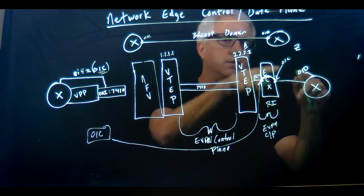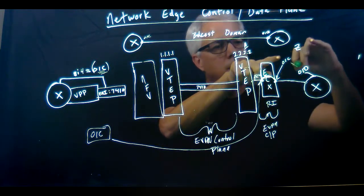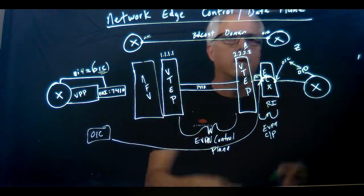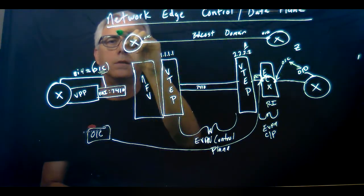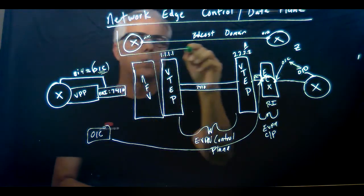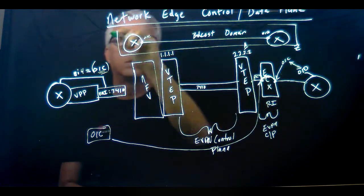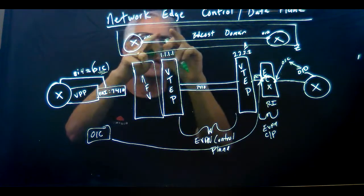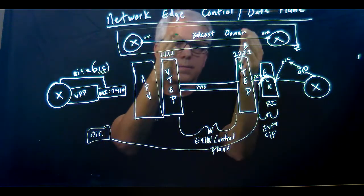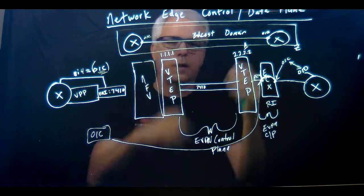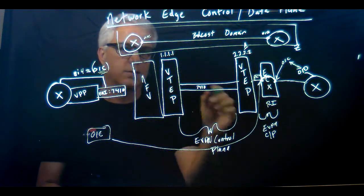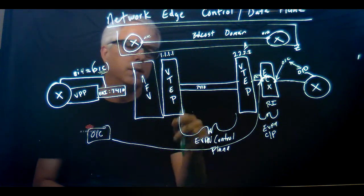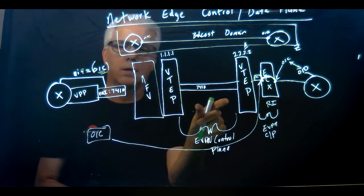So now 01C and 01D are in the same broadcast domain. A very simplified way of looking at it: we took 01C, sent it across the control plane to create the broadcast domain. The control plane used to build all this is an EVPN control plane.